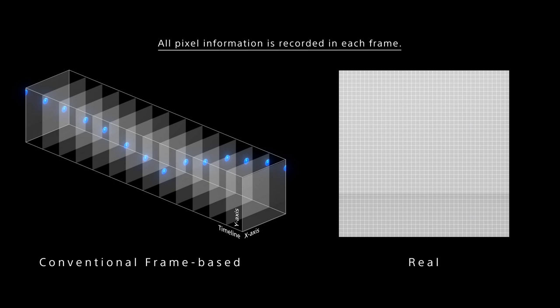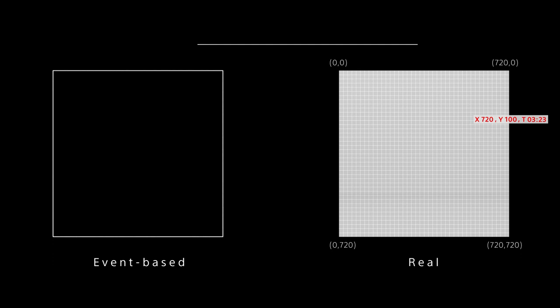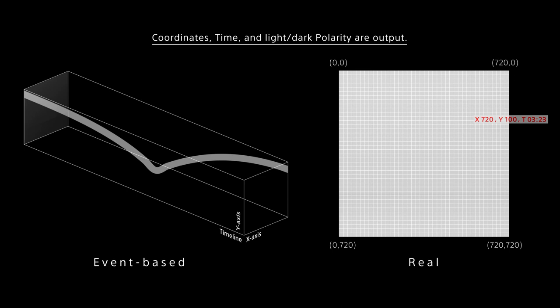On the other hand, an event-based vision sensor reacts to pixels with luminance change by the movement of the subject. Recognizing the change as an event, coordinates, time, and light and dark polarities are combined as output data for the reacting pixel.